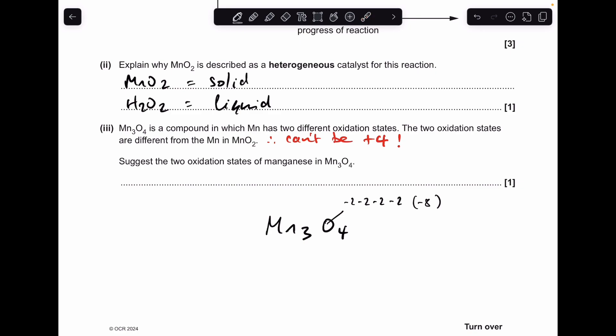So the first option you could have, you could have two +1s, that's +2, and then a +6, that gives you +8.